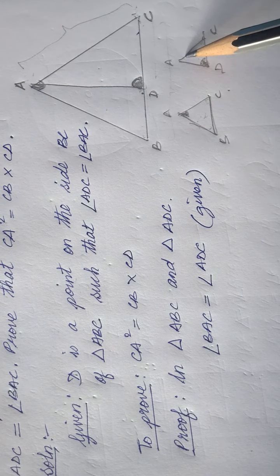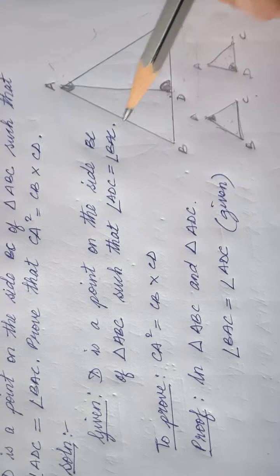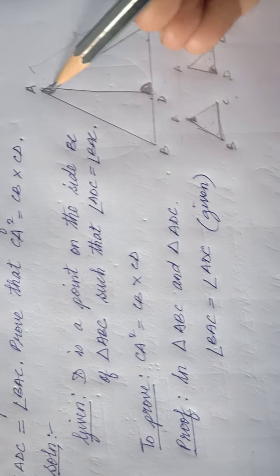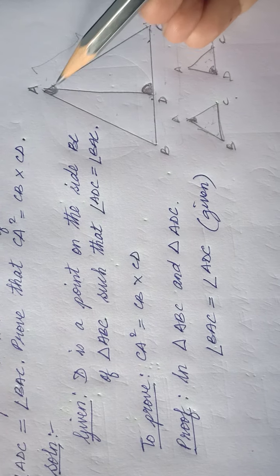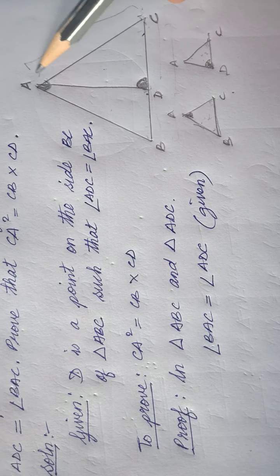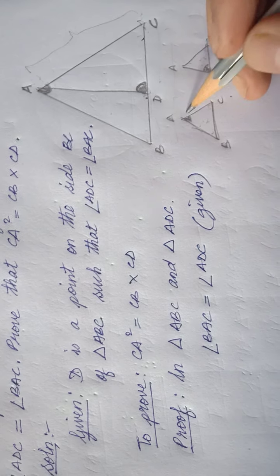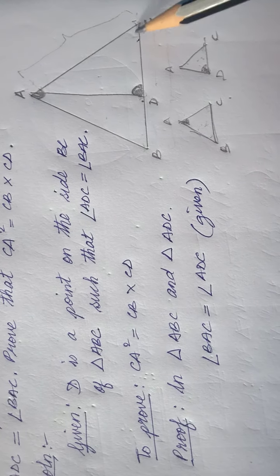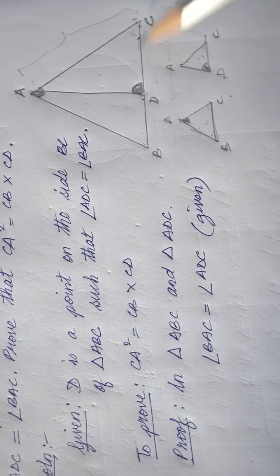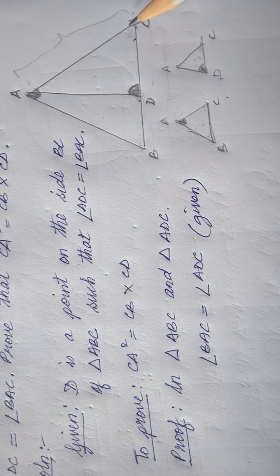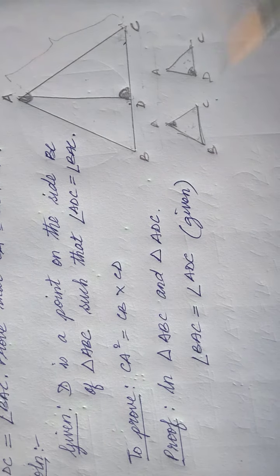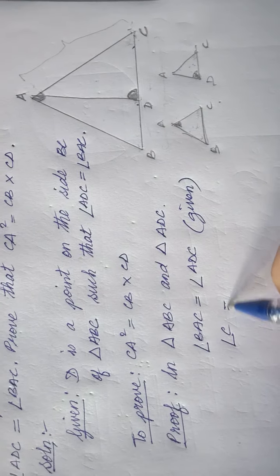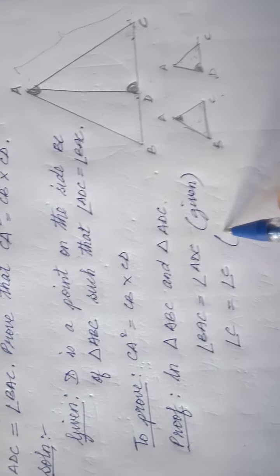Even though both triangles have angle A, they are not equal — because in triangle BAC, angle A is the whole angle, but in triangle ADC, angle A is only a small part. However, angle C in triangle ABC is the full angle C, and angle C in triangle ADC is also the full angle C — so angle C equals angle C, which is common.